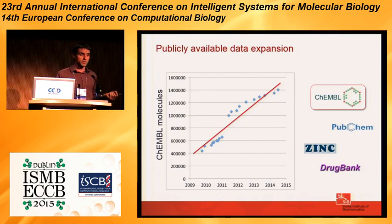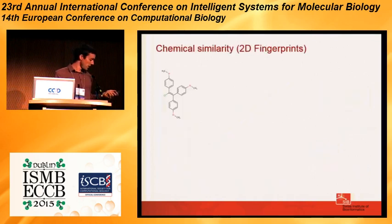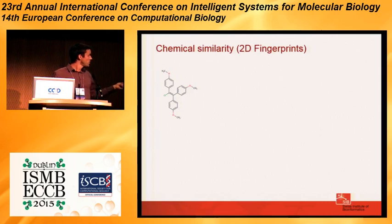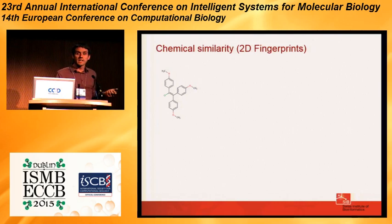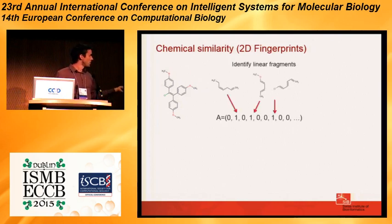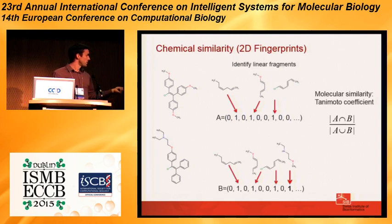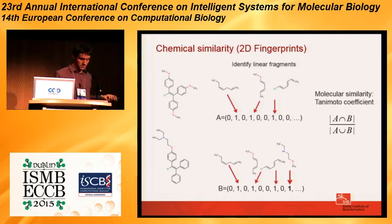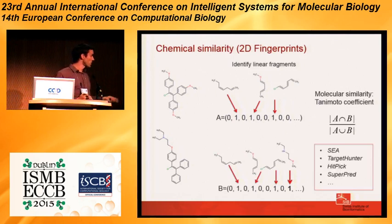An important aspect of the method is how you define similarity between small molecules. The first approach is chemical similarity — sometimes called 2D or fingerprint-based similarity. The idea is that for comparing two molecules, you identify linear fragments present in each molecule and build a fingerprint vector. You then compare fingerprint vectors using the Tanimoto coefficient, which is essentially the Jaccard index. This has already been used for target prediction in methods like ChEMBL Target Hunter, HitPick, and others.